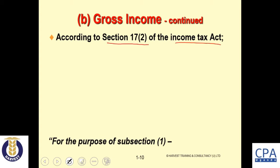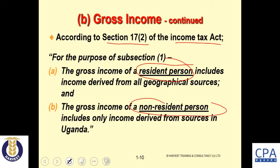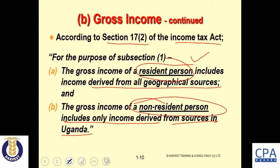According to Section 17 subsection 2, the gross income of a resident person includes income derived from all geographical sources — what we call worldwide income. The gross income of a non-resident person includes only income derived from sources located in Uganda. So for non-residents, we only charge tax on income derived from Ugandan sources.